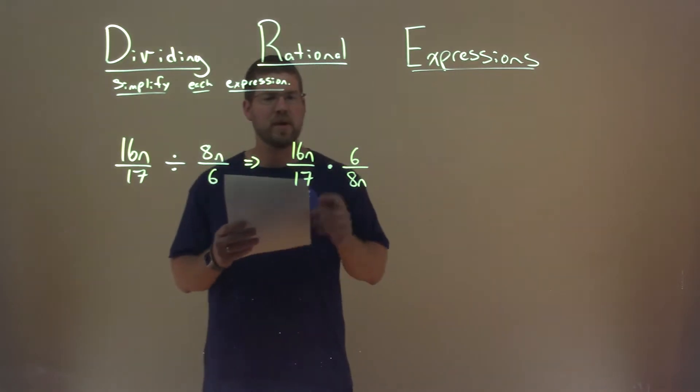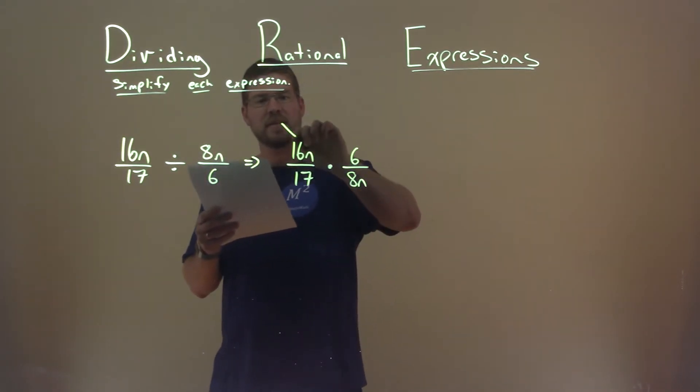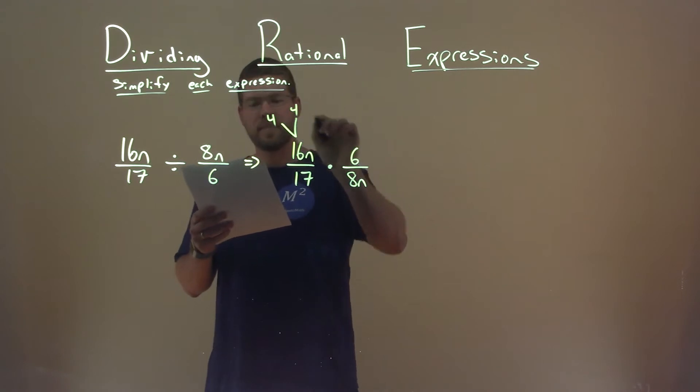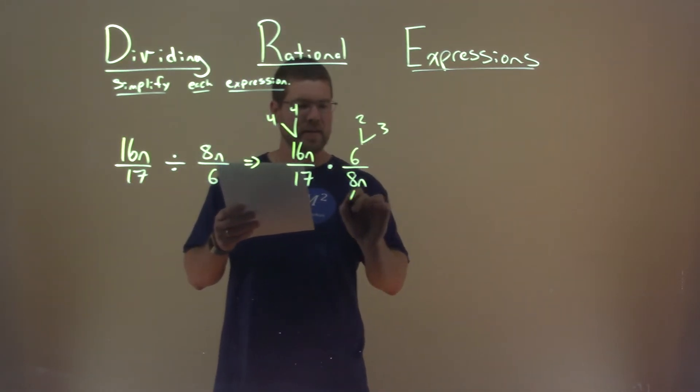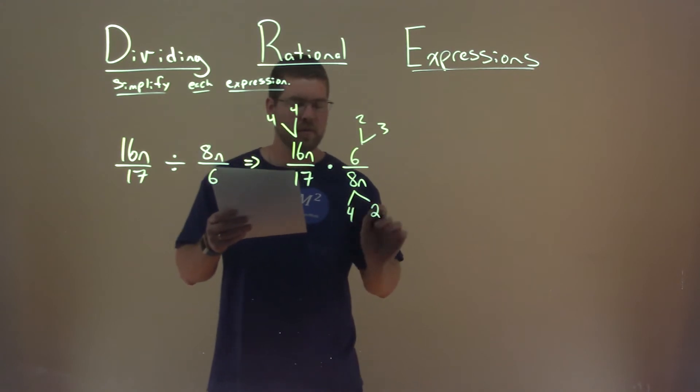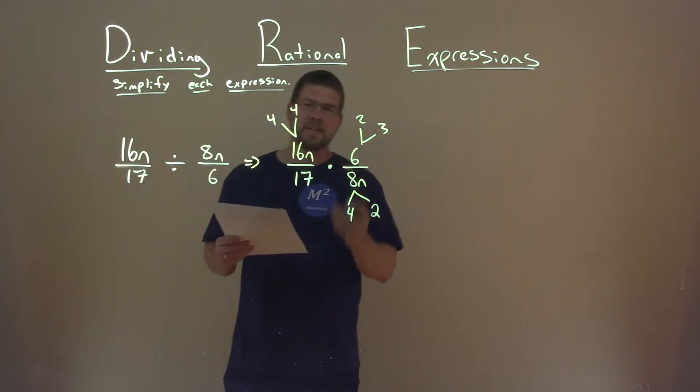So then from here, let's go break down what 16 is. 16 is 4 times 4. 6 is 2 times 3. And 8 is 4 times 2. And 17, well, it's prime.